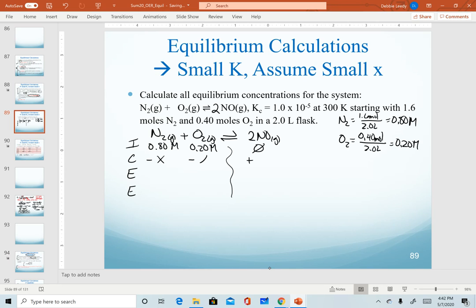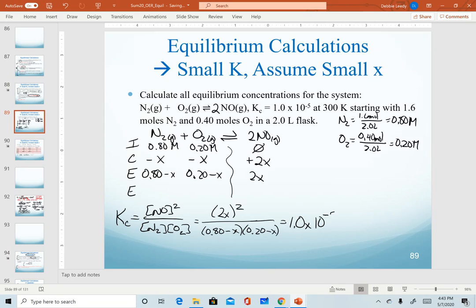Nitrogen decreases by x, oxygen decreases by x, and NO increases by 2x. We add those two lines together to get our first equilibrium line. So those are steps 1 and 2. Step 3 is writing our equilibrium expression as products over reactants. Coefficients are the exponents. And then step 4 is plugging in equilibrium values to this equation and setting this equal to our Kc value.